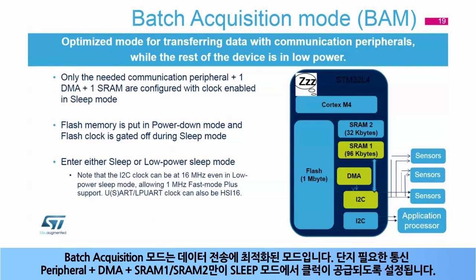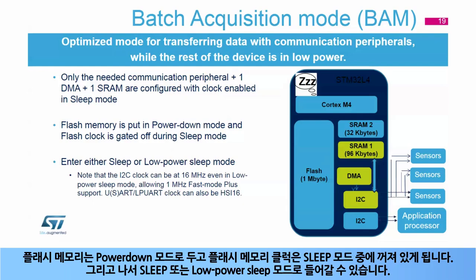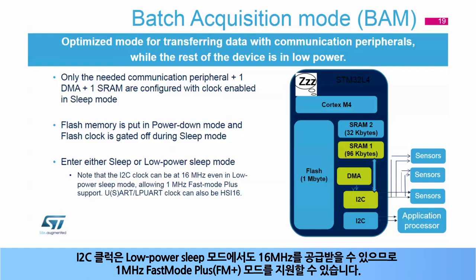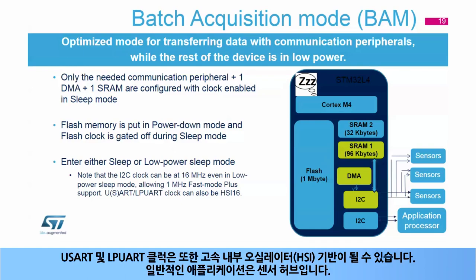Batch acquisition mode is an optimized mode for transferring data. Only the needed communication peripheral, plus one DMA, plus SRAM 1 or SRAM 2 are configured with clock enable in sleep mode. Flash memory is put in power-down mode and the flash clock is gated off during sleep mode. The device can then enter either sleep or low-power sleep mode. Note that the I2C clock can be at 16 MHz even in low-power sleep mode, allowing support for 1 MHz fast mode plus. The USART and LPUART clocks can also be based on the high-speed internal oscillator. Typical applications are sensor hubs.